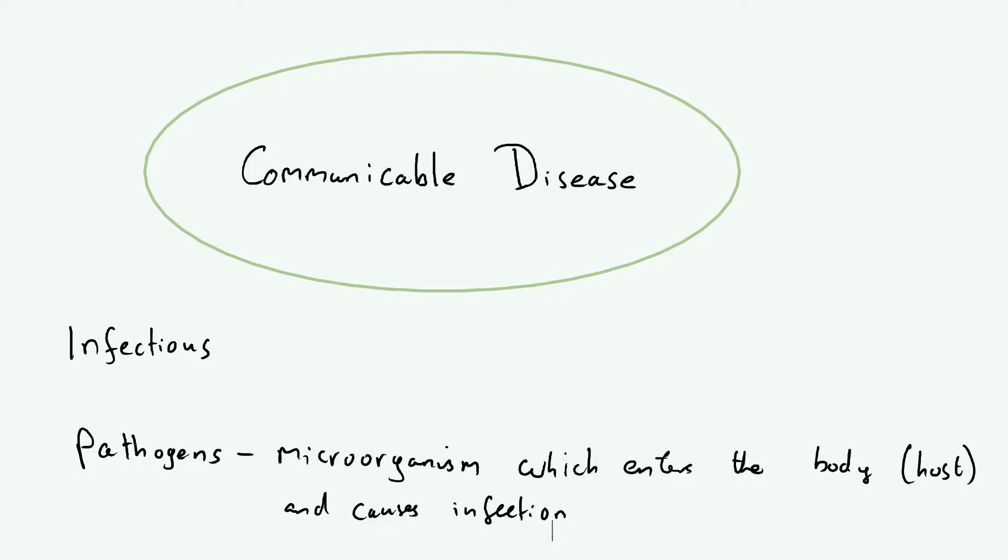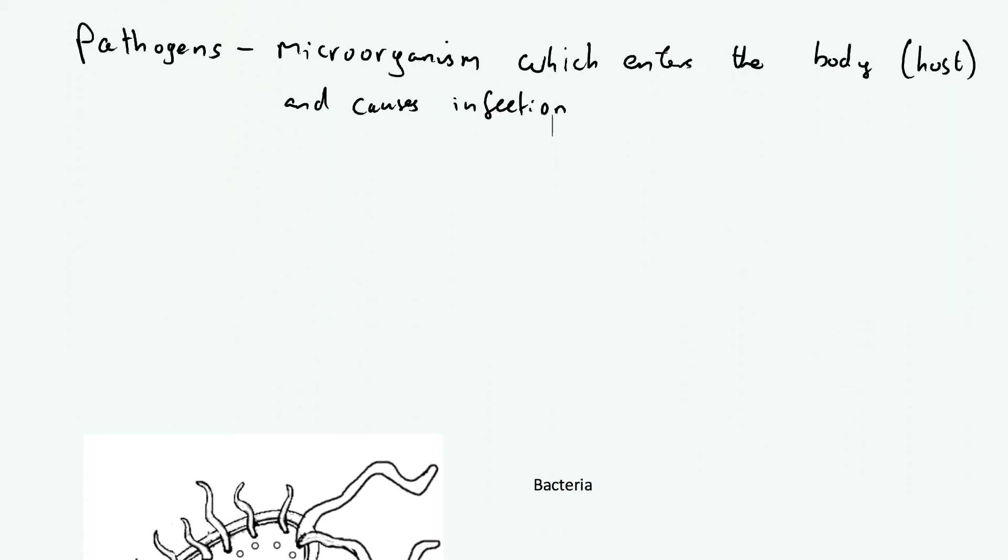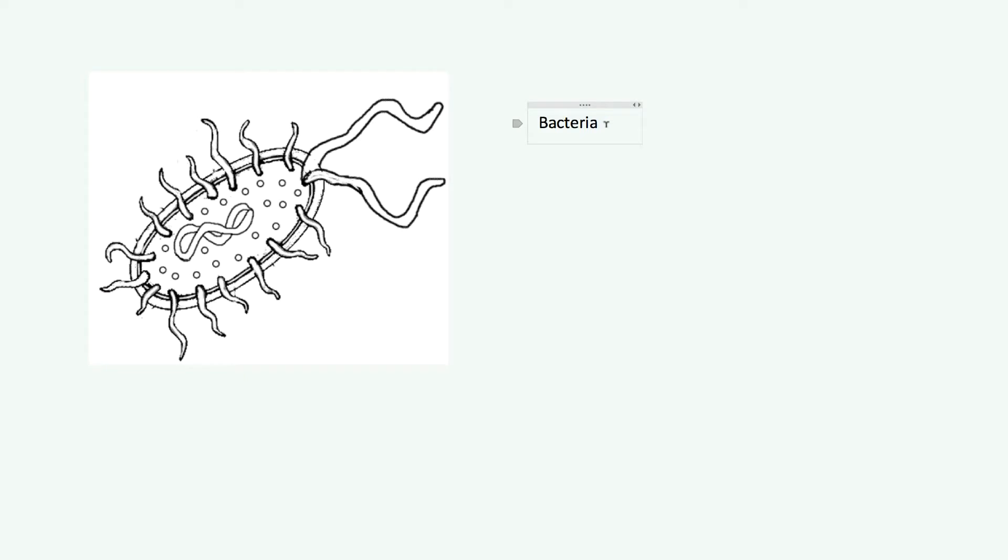Now what we're going to do quickly is run through all the different types of pathogens which can cause disease. We're going to have a look at a diagram of each. This first being bacteria. Now, bacteria are small cells around 100 times smaller than a human cell. What they do is they enter the body and rapidly multiply. That just means they increase their number quite a lot.